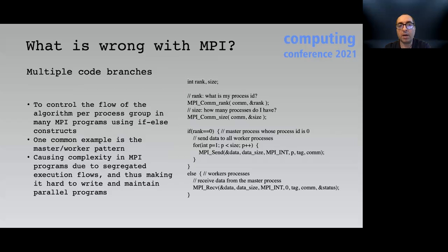So what is wrong with MPI? Firstly, in MPI programs, multiple code branches often exist to control the flow of the algorithm per process group using if-else constructs. One common model is a master worker pattern which is commonly employed through explicit two groups of conditional branches, one for master and the other for worker processes. Having such segregated execution flows result in complexity in MPI programs and thus making it hard to write and maintain parallel programs.